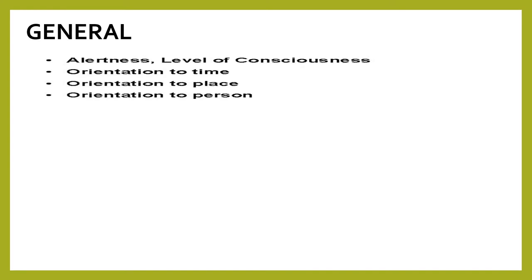In the general physical examination of the nervous system, we should check the level of consciousness or level of alertness of the patient. We should also check for orientation — orientation to time, place, and person. If a patient is conscious and oriented, we say they are conscious and oriented to time, place, and person.